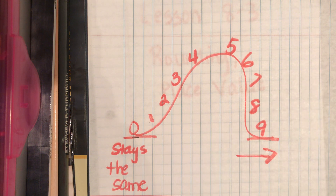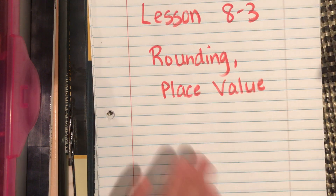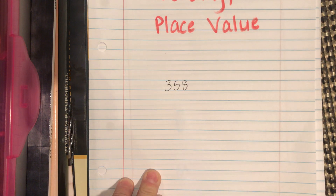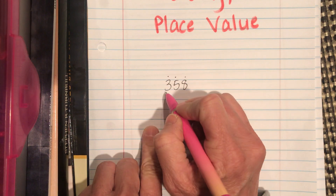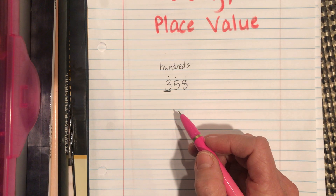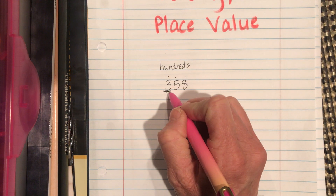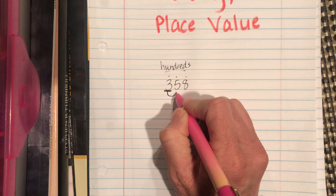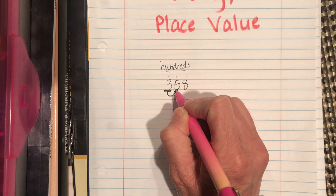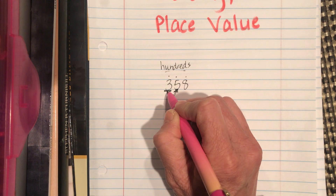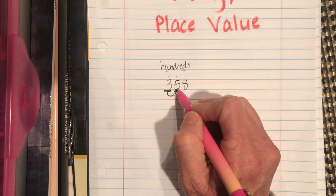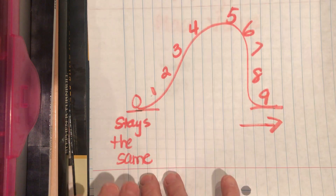Let's say we want to round 358 to the nearest 100. Ones, tens, hundreds — if they're saying hundreds, we underline the number that's in our hundreds place value. That's step one: find your place value, then look right next door. This number next door is the boss applesauce — it determines whether we stay at 300 or get bumped up to 400. The most important number in this rounding is five.